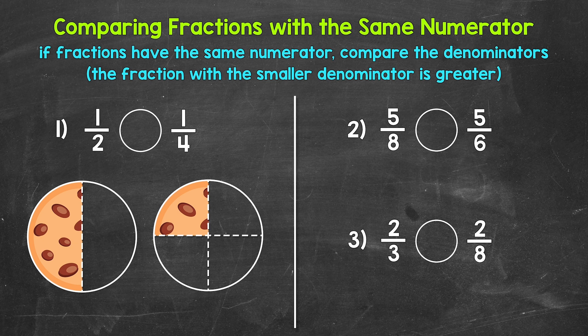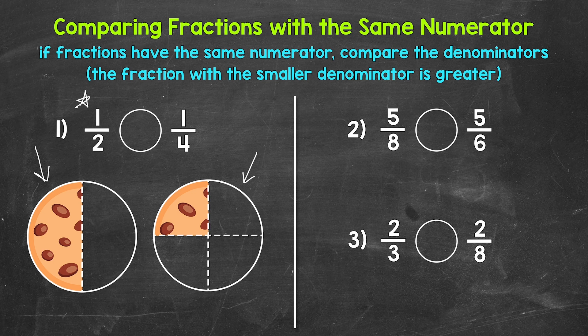Looking at number one, we have two big chocolate chip cookies to help us out. Both cookies were the same size to start, and we are looking at what fraction of each cookie is left. The cookie on the left was divided into two equal parts — one out of the two parts is left, so our fraction is one-half. The cookie on the right was divided into four equal parts — one out of the four parts is left, so our fraction is one-fourth. Just by looking at the cookies, we can see that one-half is greater than one-fourth. There is more of the cookie left for one-half. But how does that work, since both cookies have one part left?